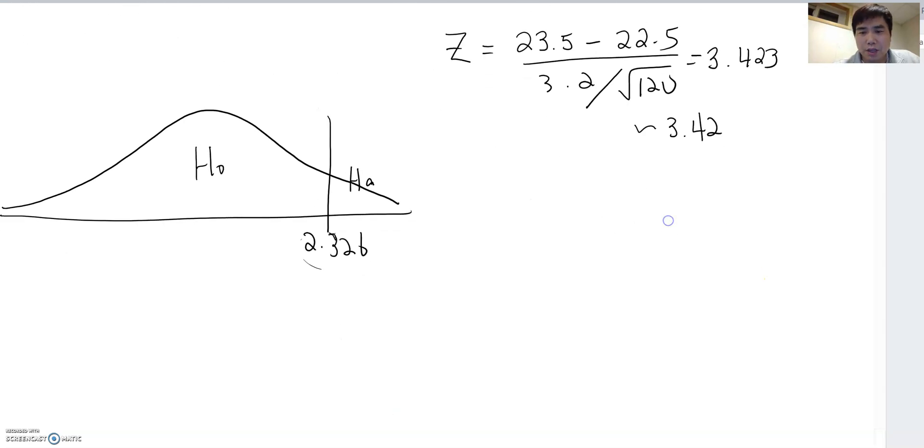Now, same way. I am going to bring this number to here, so 3.42. Does this number belong to the HA area or H0 area? Centering on 2.326, you are analyzing it. Yes, obviously 3.42 is bigger than 2.326, so it belongs to HA here.